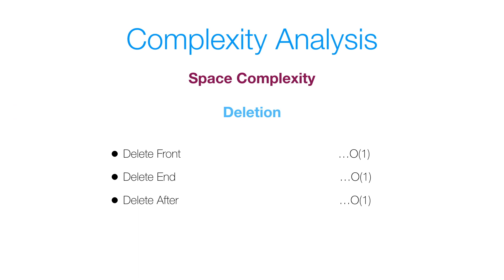For the space complexity of deletion: deleting at the front uses a constant amount of space — O(1). Delete at end and delete after a given node also use a constant amount of space, so all deletion operations have O(1) space complexity.